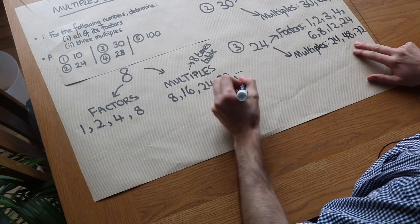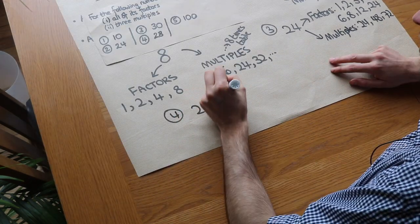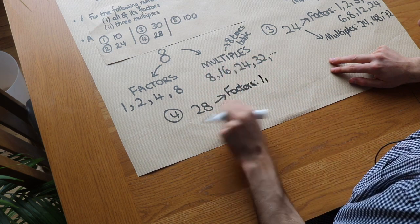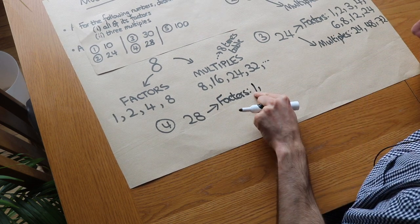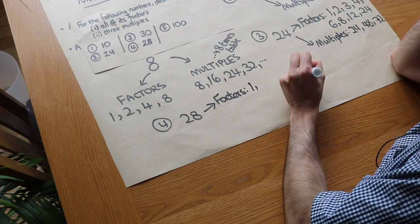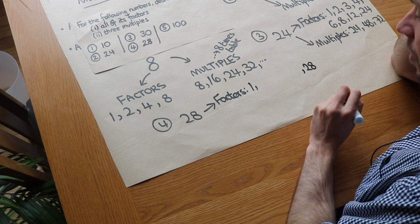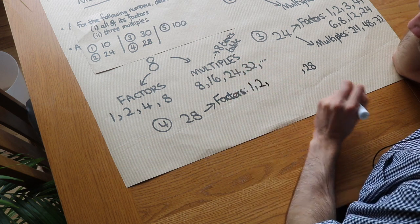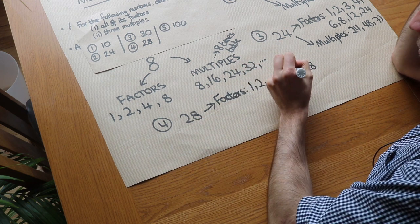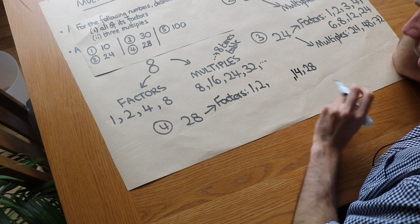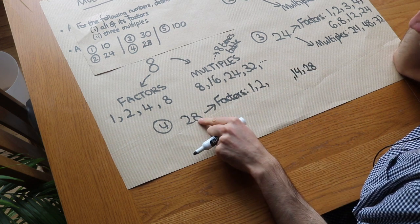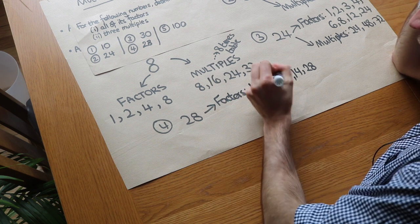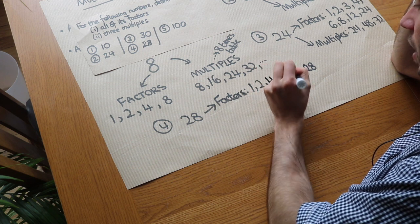Next, the number 28. Let's use the same factor pairs trick. 1 times 28 gives 28, so both are factors. Does 2 go into 28? Yes, because 28 is even — 2 times 14 is 28, so 14 is a factor. Does 3 go into 28? No. What about 4? Yes, it goes in 7 times, so we have the pair 4 and 7.